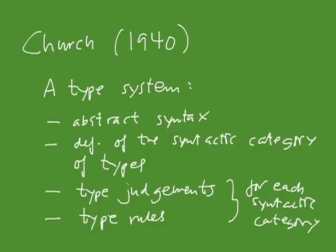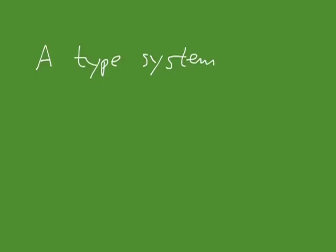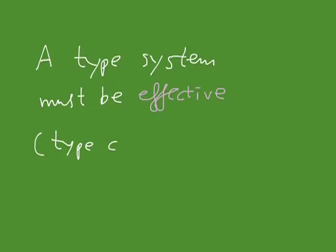Why do you need type systems? You don't strictly need them, but they're quite useful. We can use type systems to classify programs into ones that are well-typed and ones that are not. An implementation of a typed programming language incorporates a type checker as an early form of preprocessing before interpretation or compilation. A natural requirement is that a type system must be effective — meaning there must be an algorithm for type checking.